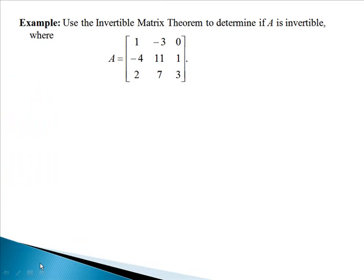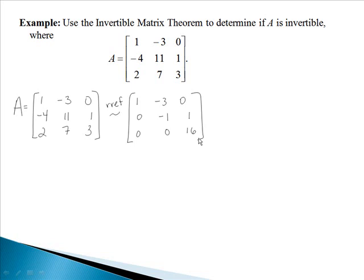We want to use the Invertible Matrix Theorem to determine if this given matrix A is invertible. We're going to write down our matrix A and now we want to row reduce it. When we row reduce it — not necessarily to completely reduced echelon form, but just to echelon form — we can see in this matrix that we have three pivot positions: here, here, and here. Since this was a 3 by 3 matrix to start with, A has three pivot positions, which means that by our Invertible Matrix Theorem, A is invertible.